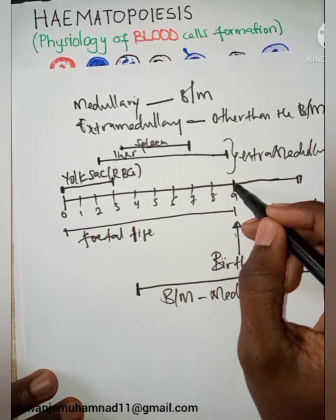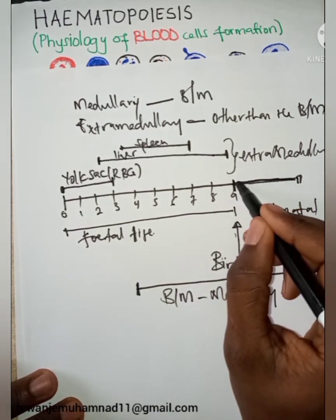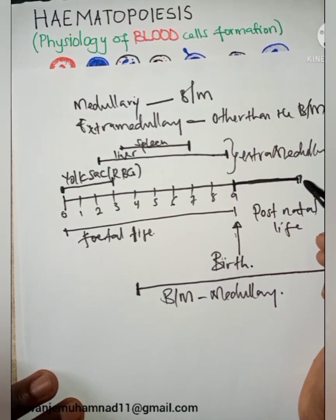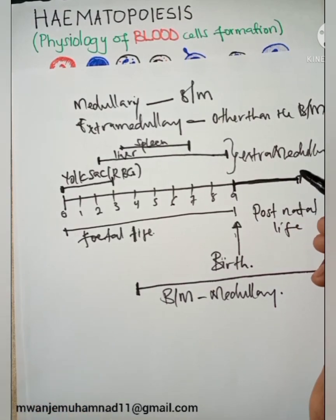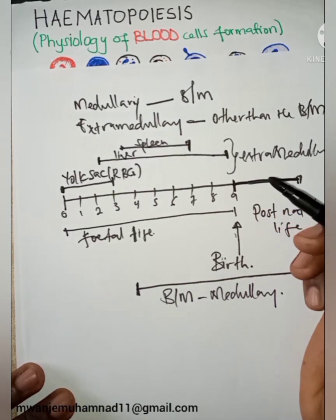Even in the postnatal life, in cases of severe need of blood cells, maybe the bone marrow is not functional very well, maybe the demand is too much, there can be resumption of extramedullary hematopoiesis. And these sites will still produce blood cells to help the bone marrow.